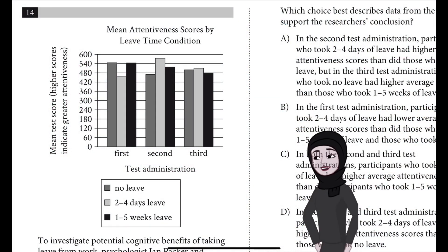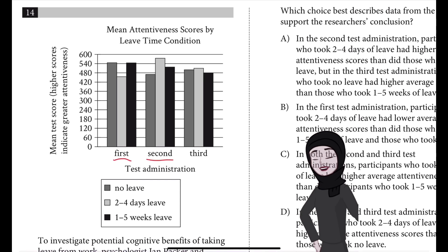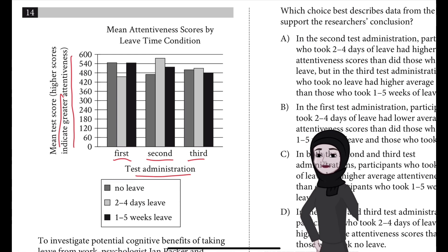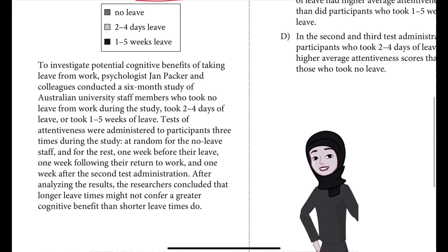Question number 14. We have a graph given: first, mean attentiveness scores by leave time condition. The x-axis has the first, second, and third test administration as the label, and the y-axis has the mean test score — higher scores indicate greater attentiveness — going from 0 to 600.